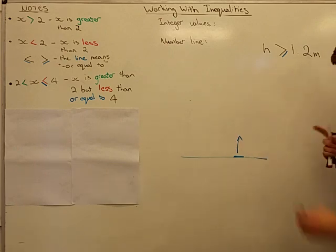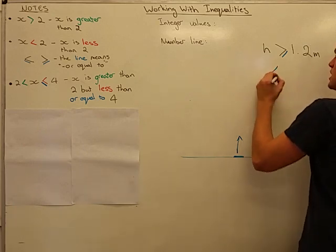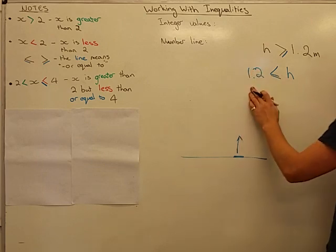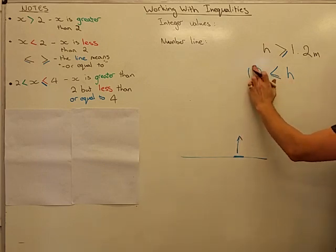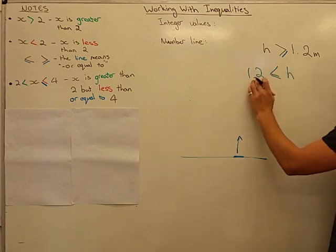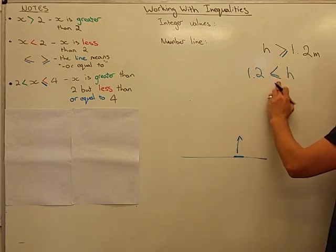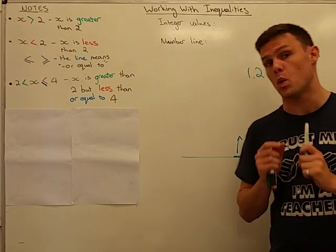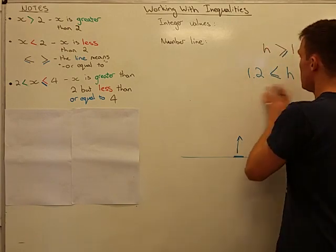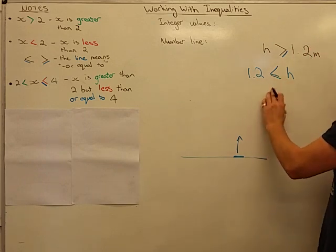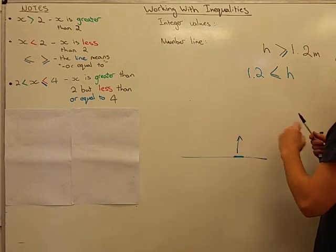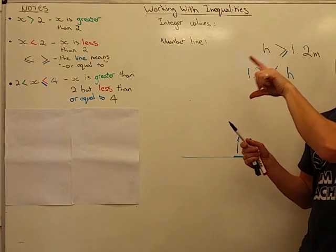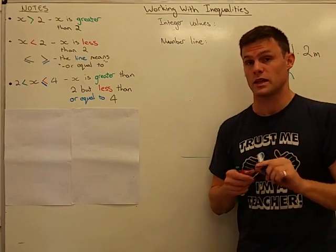Now I should point out at this point that it doesn't matter what direction the sign faces. I can say there that h is bigger or equal to 1.2 metres, or I can flip around and say that 1.2 metres is less than or equal to h. So you can read them both ways, which is important, because often people will read this incorrectly simply because they're used to the greater than sign always facing that direction. The greater than sign doesn't have to face that direction, it can face that way and still be written as greater than.